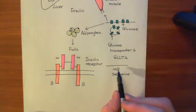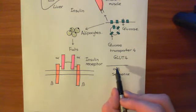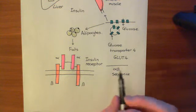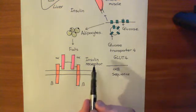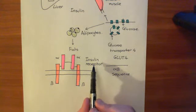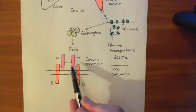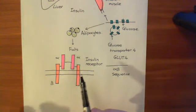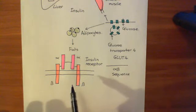Both subunits are within this alpha-beta sequence. You chop it up and get an alpha subunit and a beta subunit. That's how you make both subunits from just one gene — you use this gene twice to get two alpha subunits and two beta subunits, then bind them all together to get your insulin receptor.